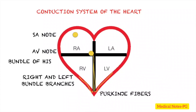So again, the conduction system of the heart begins at the SA node, goes to the AV node, next is the Bundle of His, then the right and left bundle branches, and eventually the Purkinje fibers.